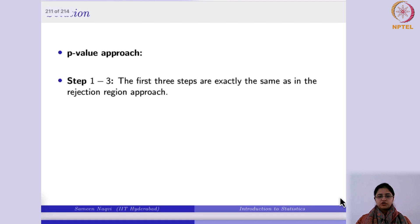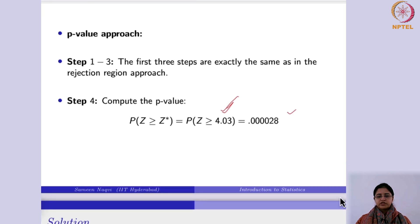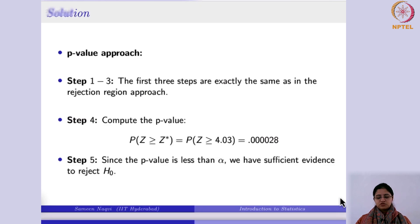Using the p-value approach, the p-value equals P(Z ≥ 4.03), which from the table is approximately 0.0040 — a very small value, less than any reasonable alpha. So we reject the null hypothesis and conclude the alternative is true. This completes hypothesis testing using the rejection-region and p-value approaches for single-sample problems. In the next week, we will cover two-sample problems, and in the next lecture, we will use Python to solve these problems.